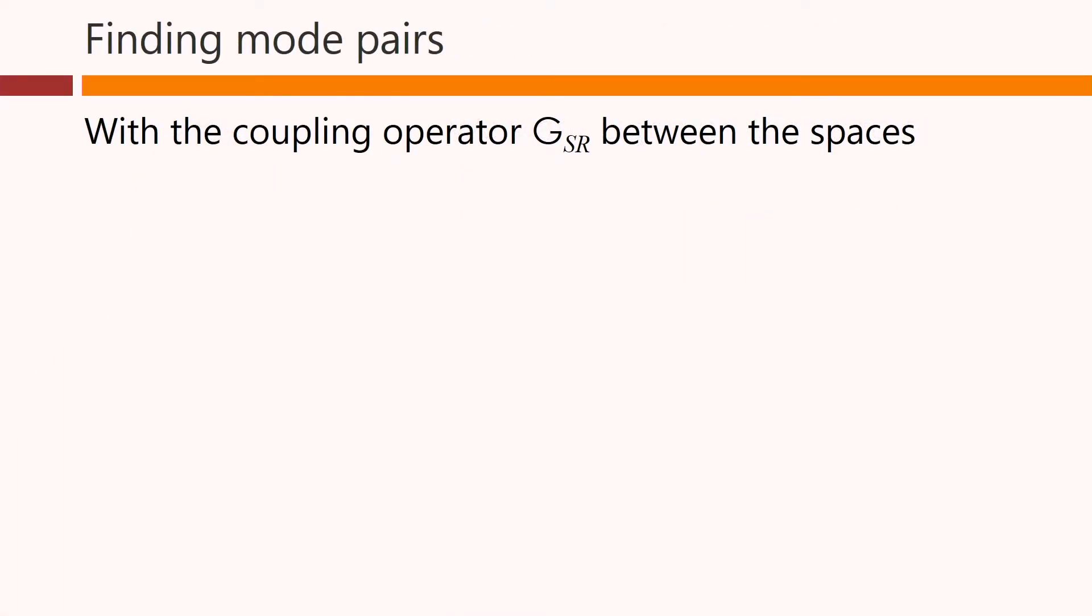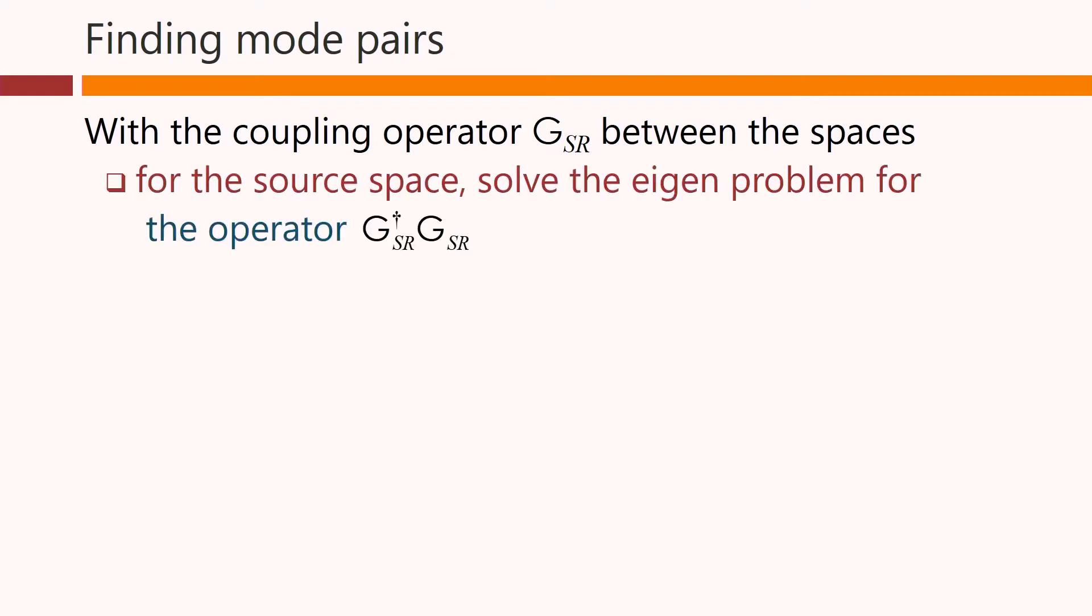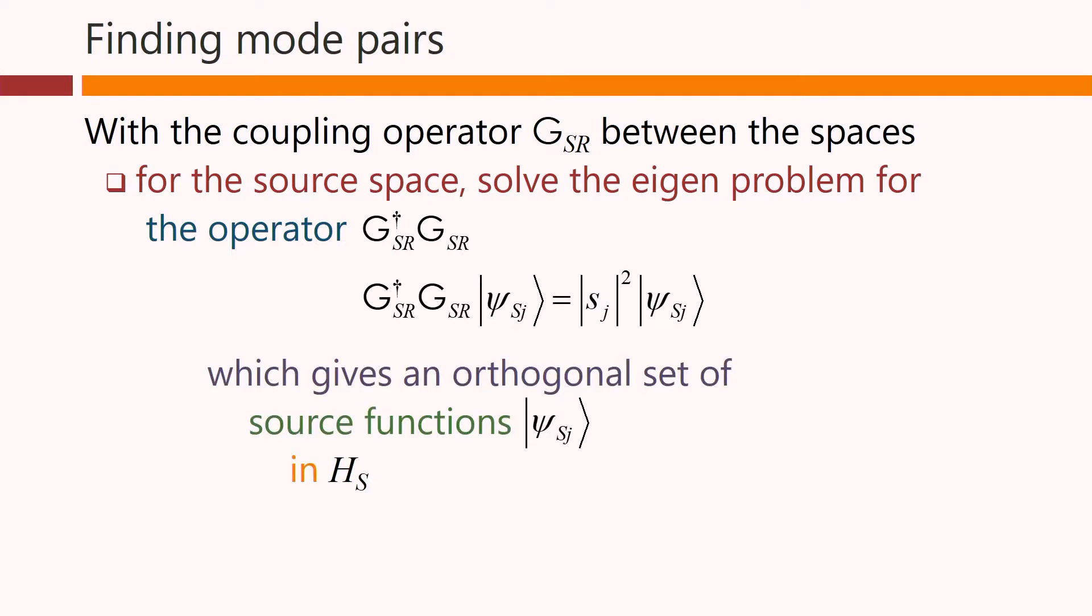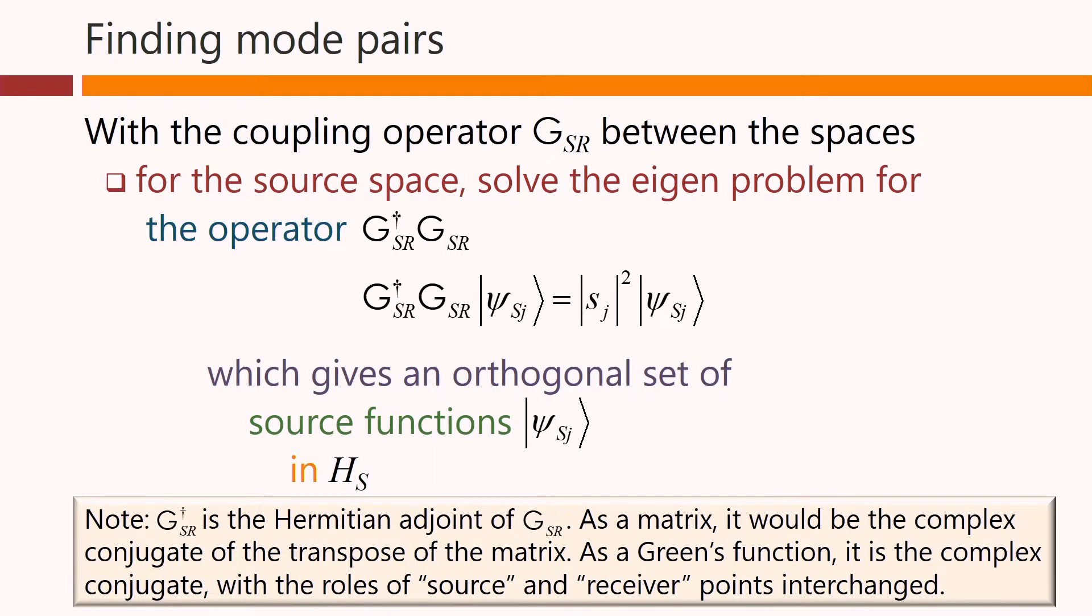With the coupling operator G_sr between the spaces, for the source space, we can solve the eigenproblem for this different operator, the product of G†_sr and G_sr. The solutions to this eigenproblem give us an orthogonal set of source functions, ψ_sj, in this Hilbert space H_s. Incidentally, the Hermitian adjoint of G_sr as a matrix would be the complex conjugate of the transpose of G_sr. And as a Green's function, it's a complex conjugate with the source and receiver points interchanged.